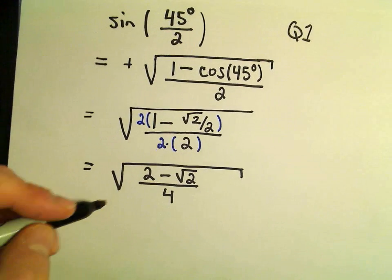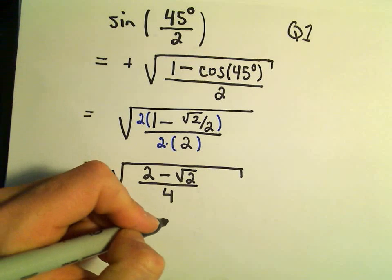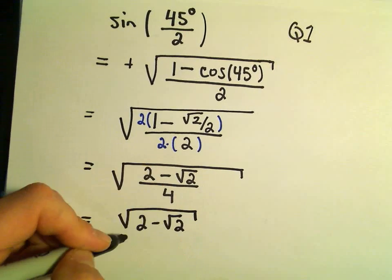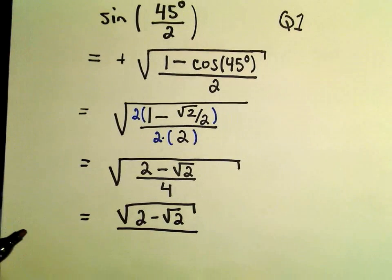You could even rewrite this a little bit more. We could take the square root of the numerator. So we would have 2 minus the square root of 2, all of that's being square rooted. And then we could take the square root of 4 individually.